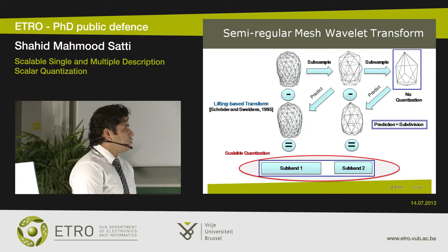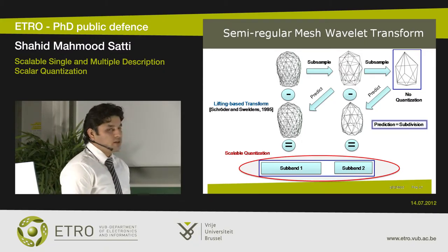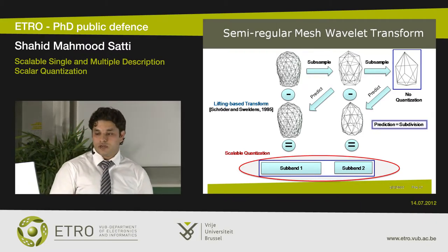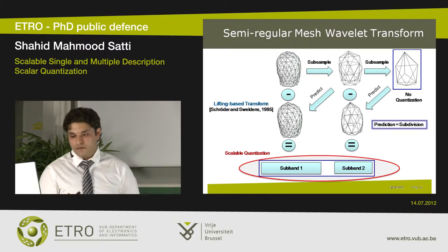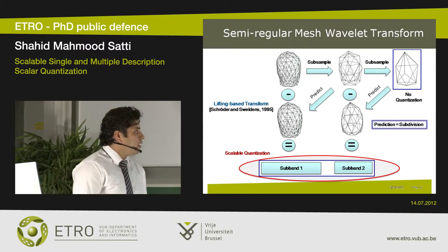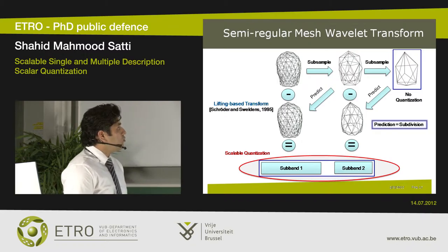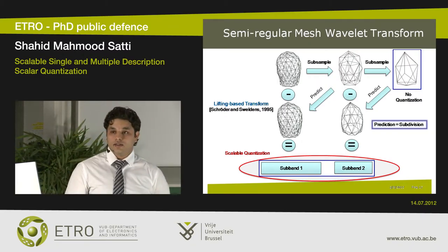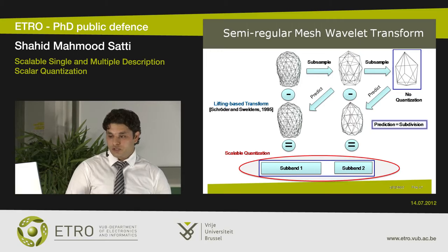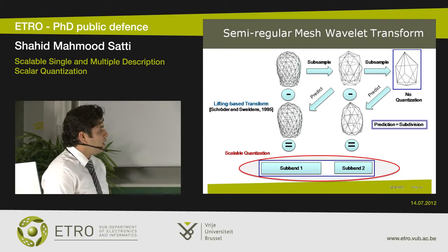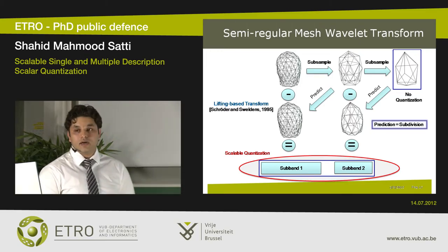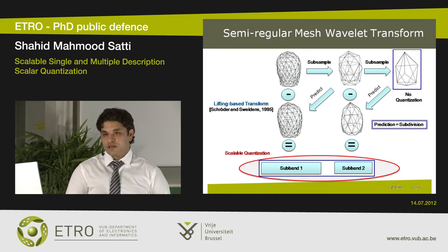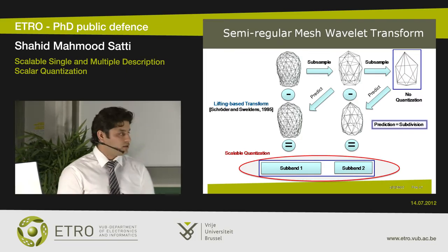These two components can be combined in the inverse transform to reconstruct the original semi-regular mesh, because the wavelet transform is lossless. For scalable compression, we save the base mesh losslessly with no quantization, and we apply scalable quantization to the prediction errors — also called wavelet coefficients — coding them in a bit-plane by bit-plane fashion.